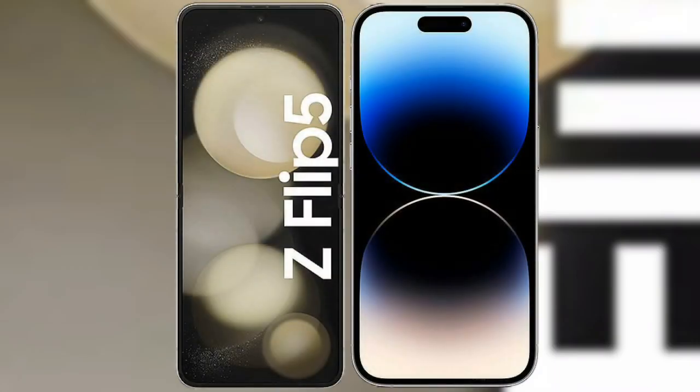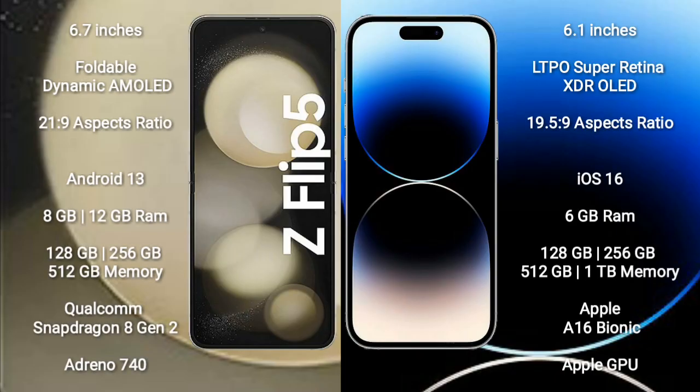I will compare the new Samsung Galaxy Z Flip 5 with iPhone 13 Pro. Samsung Galaxy Z Flip 5 comes with a 6.7-inch foldable dynamic AMOLED display and aspect ratio 21.9. iPhone 13 Pro comes with a 6.1-inch Super Retina HDR OLED display and aspect ratio 19.5:9.